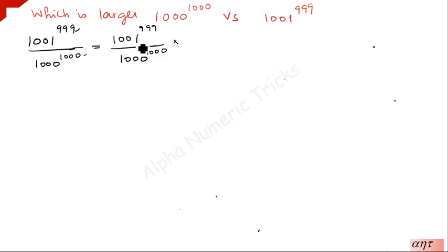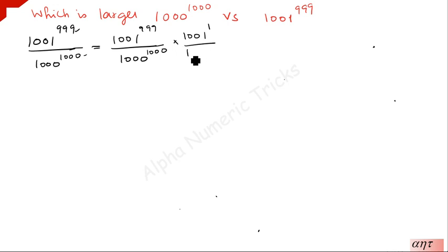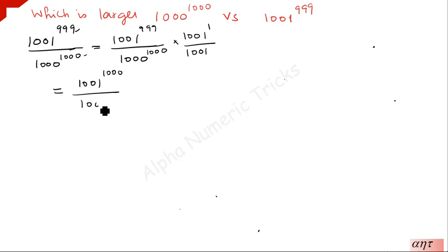Without changing the value, we need to make this power 1000. For that we need 1001 to the power 1. Since the base is the same, 999 plus 1 is 1000, giving us 1001 to the power 1000. We then divide by 1001 to keep the value unchanged. So the numerator becomes 1001 to the power 1000 divided by 1000 to the power 1000, times 1 over 1001.